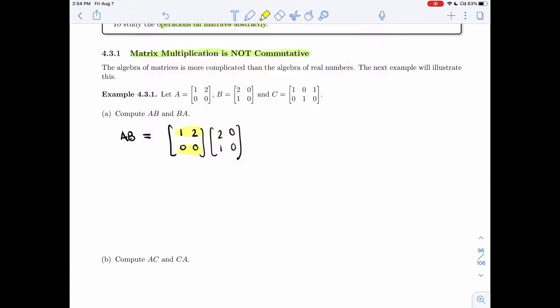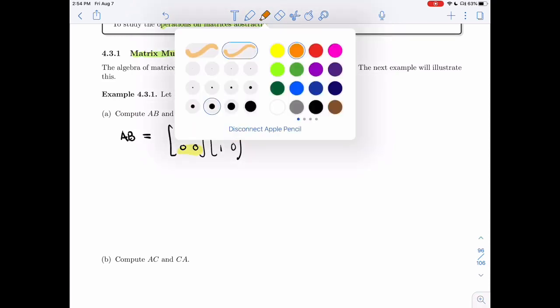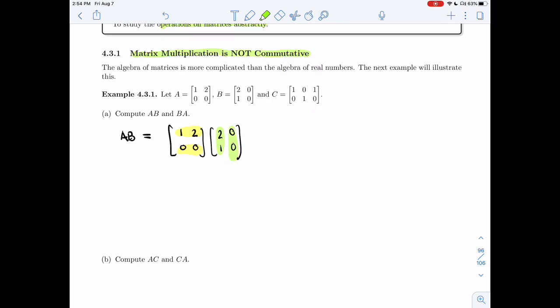So for the first entry, you take 1, 2 times 2, 1. So that's 2 plus 2. Then 0 plus 0, 0 plus 0, and 0 plus 0. So I get a pretty simple matrix. When I multiply these, I get a 4, 0, 0, 0.